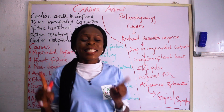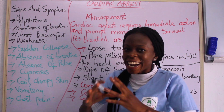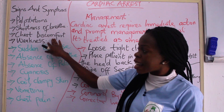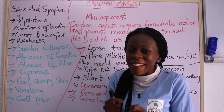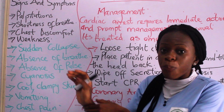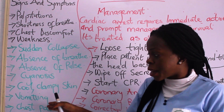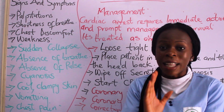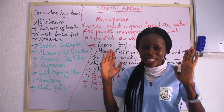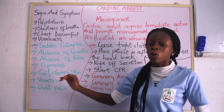What are the signs and symptoms of cardiac arrest? Sometimes before the main incident, some patients have palpitations — an increase in heart speed — shortness of breath, chest discomfort, and weakness. But in cardiac arrest proper, there is sudden collapse. When you check, there is no respiration, absence of breath, absence of pulse, cyanosis, cool clammy skin, vomiting, and there might be chest pain. The major signs are sudden collapse, absence of breath, absence of pulse, cyanosis — which is bluish discoloration — and cool clammy skin.